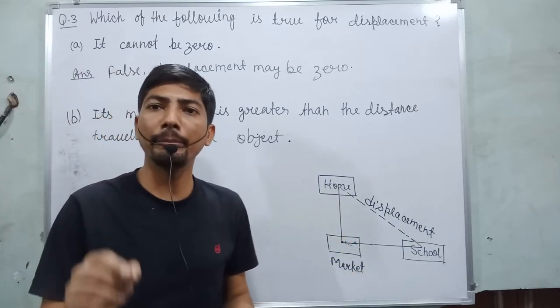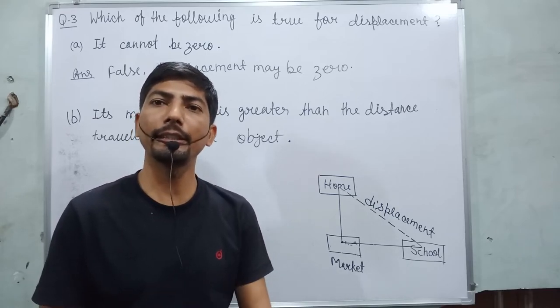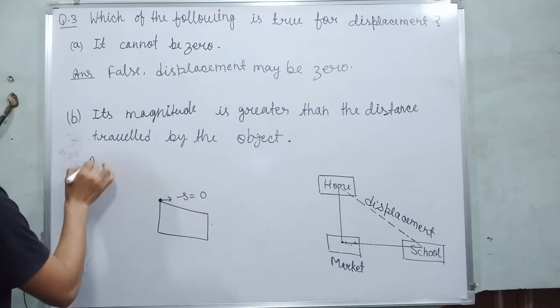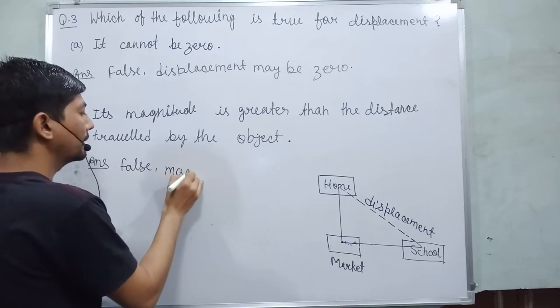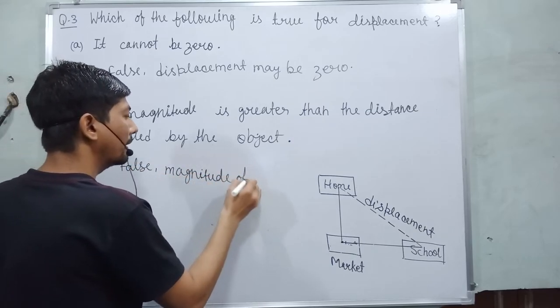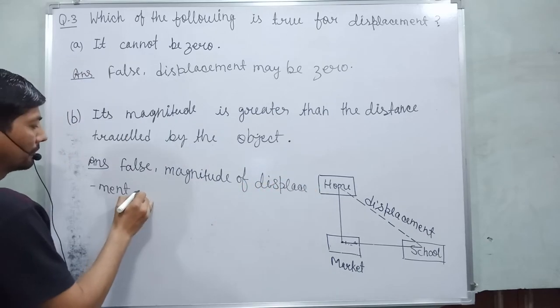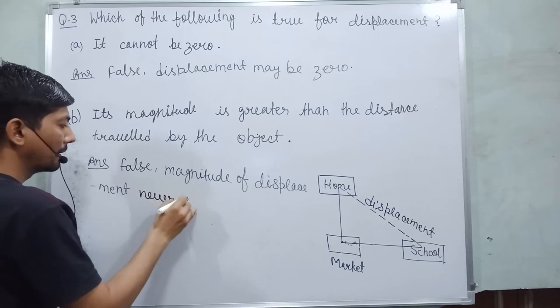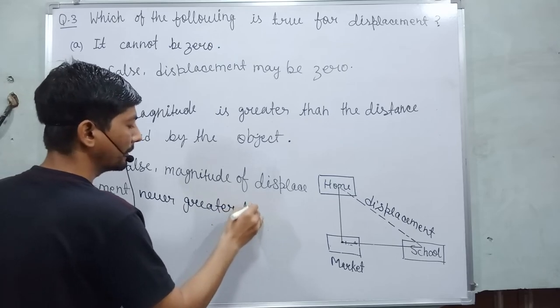Displacement may be lesser than distance, equal to distance, or may be zero. But never ever greater than distance. So answer of this question is also false. Magnitude of displacement is never greater than distance.